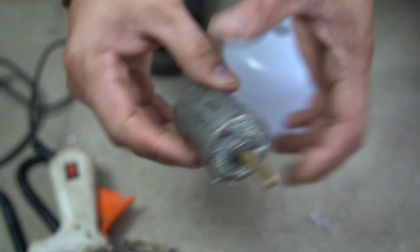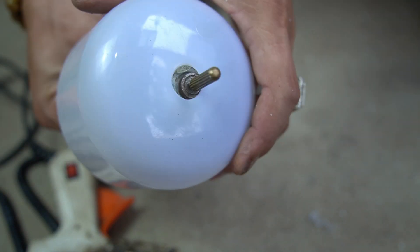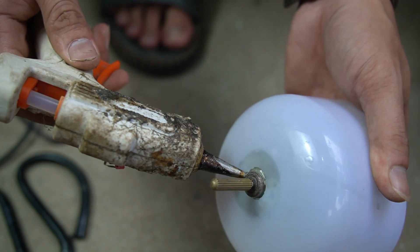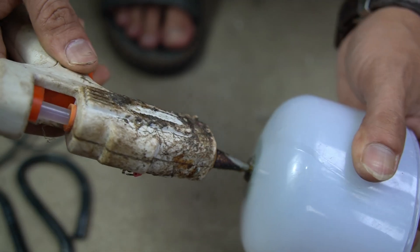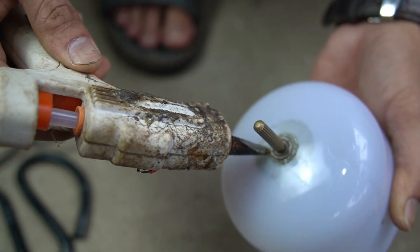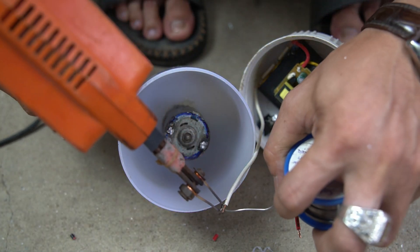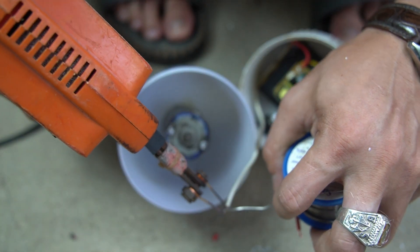Next, use glue to fix the motor to the light bulb cover. I will connect the remaining two wires to the motor.